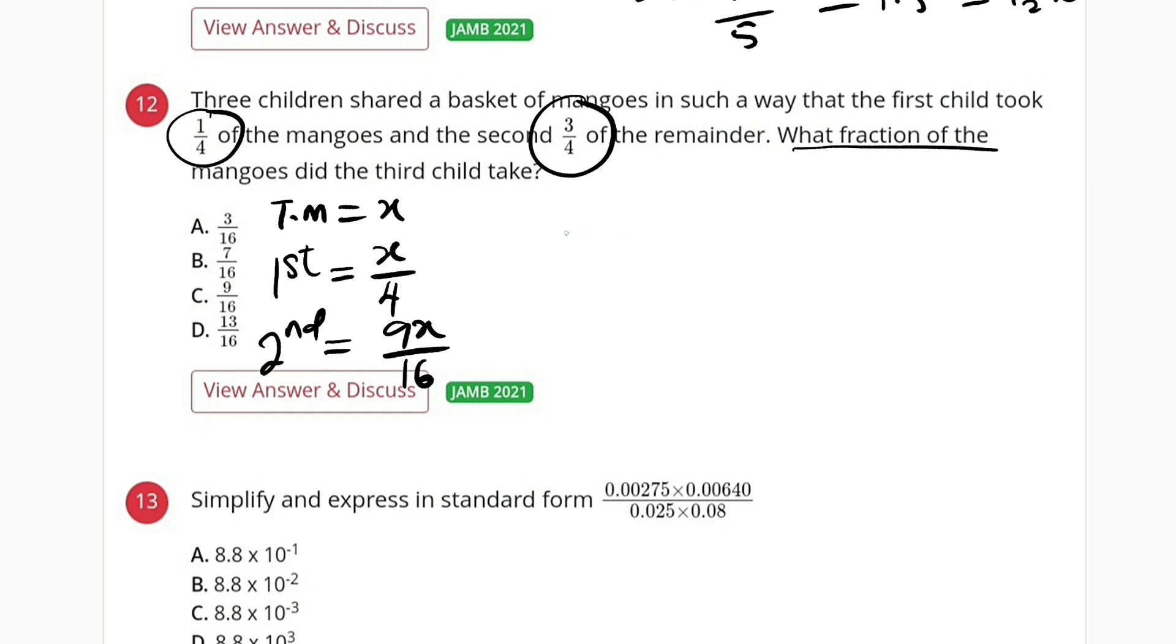To find that fraction, we are going to say that x minus the sum of the first, which is x divided by 4, plus 9x divided by 16.